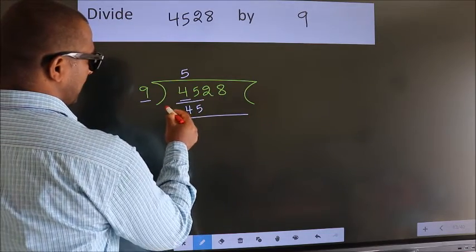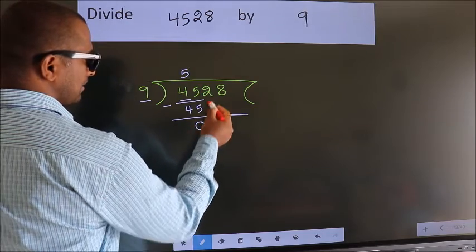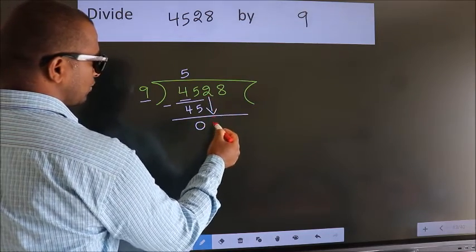Now we should subtract. We get 0. After this, bring down the beside number. So, 2 down.